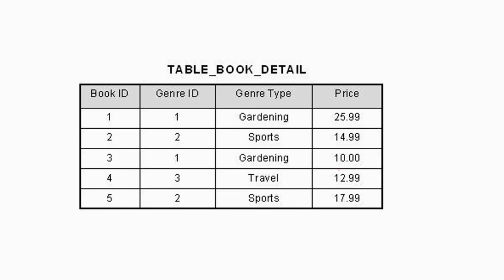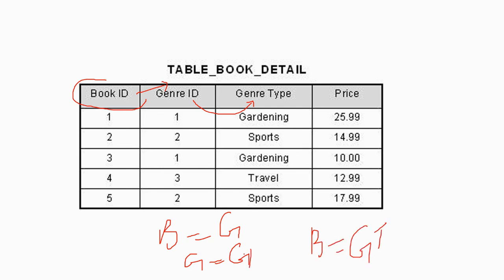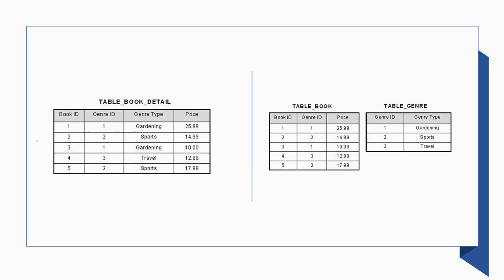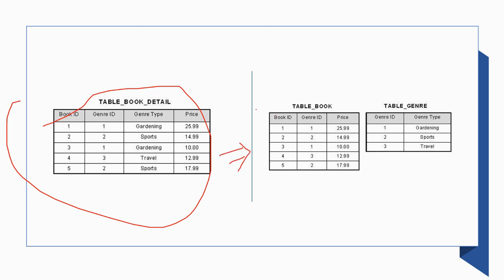There should not be any transitive dependency. In this table, book ID determines journal ID, and journal ID determines journal type. By the transitive rule, book ID determines journal type — this is transitive dependency. To eliminate it, we decompose the table: one table has book ID, journal ID, and price; another table has journal ID and journal type. The transitive dependency is now eliminated.